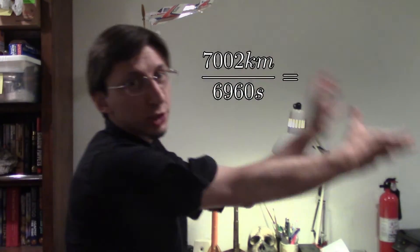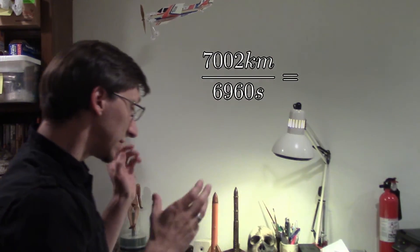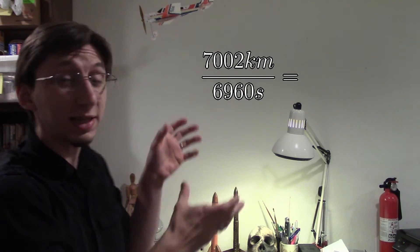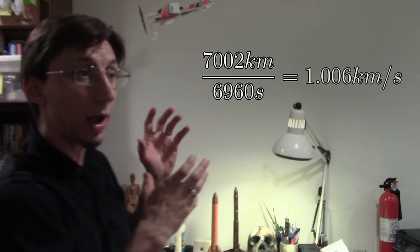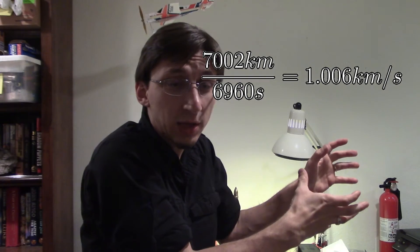The Moon is moving 7,002 kilometers in 6,960 seconds. That means the Moon is moving about 1.006 kilometers every second. Now this is pretty good. The Moon actually moves about 1.02 kilometers every second. That's the accepted value.